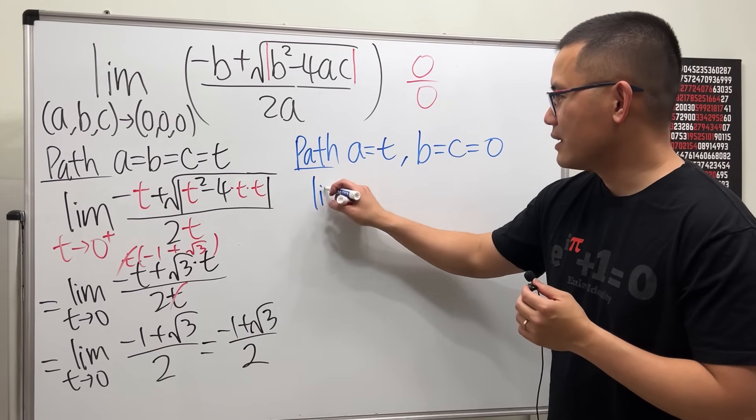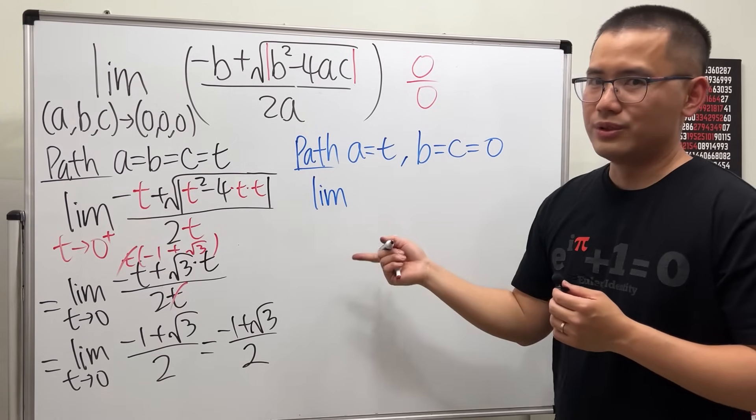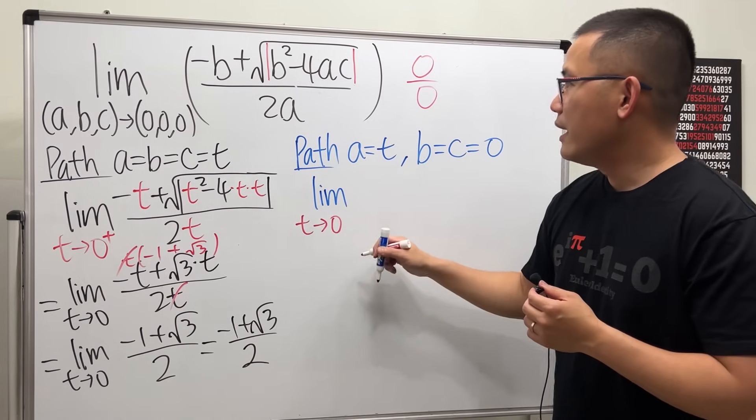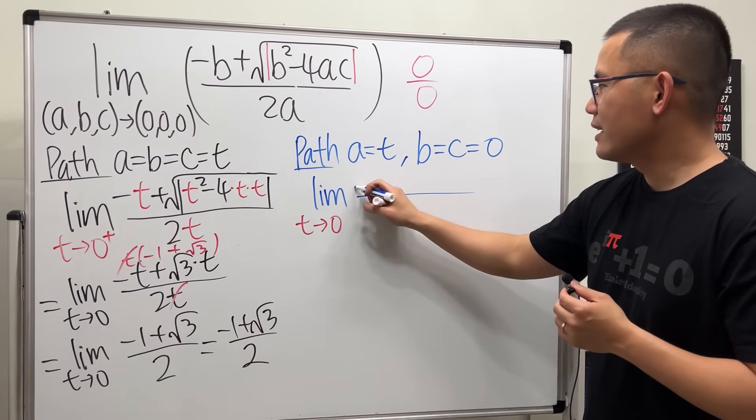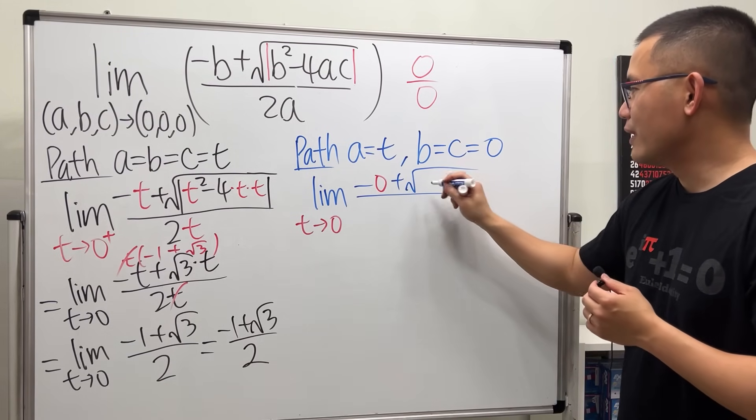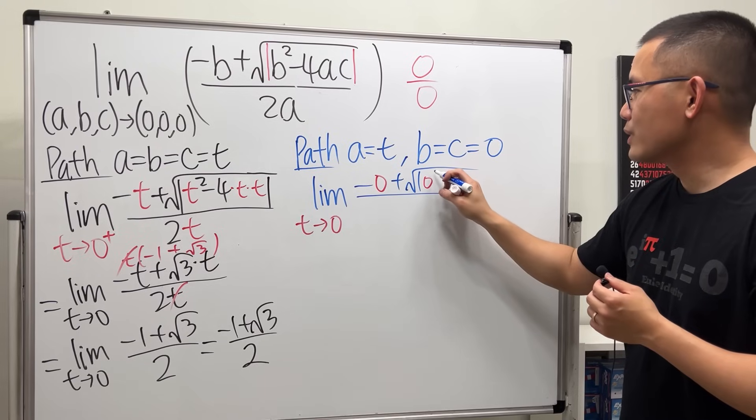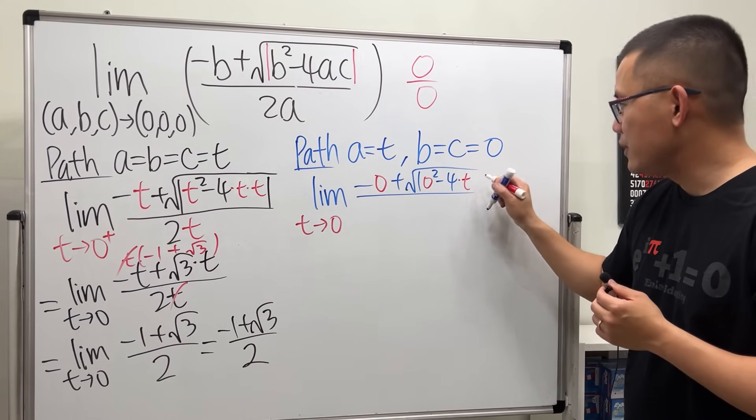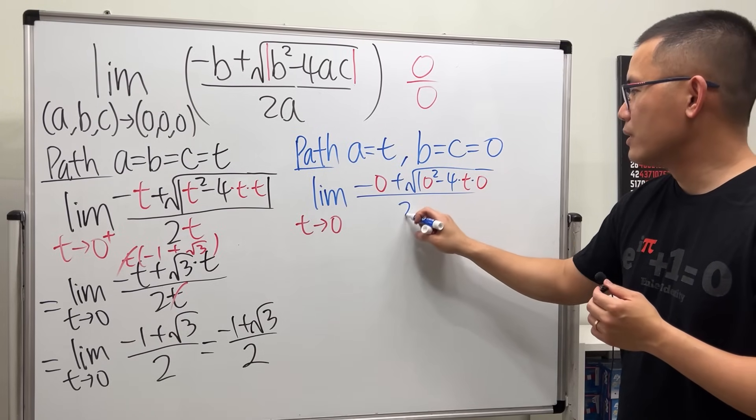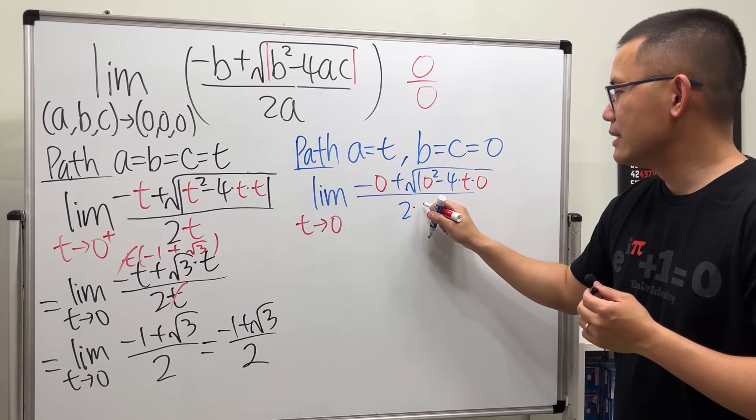So this right here will give us the limit, t will go to zero, yeah. So I'll just put this down right here. And we have negative b is zero, and then plus square root of absolute value zero squared minus four times t for a, but zero for c, and over two t.